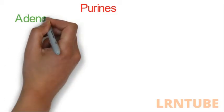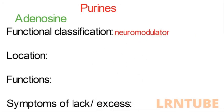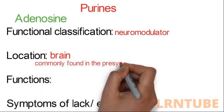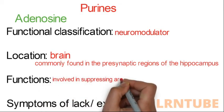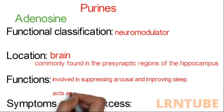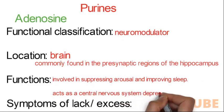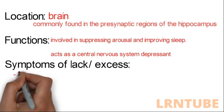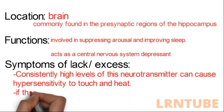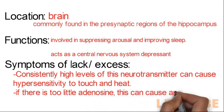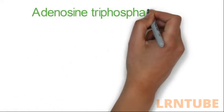Under purines, we have adenosine and adenosine triphosphate. Adenosine is classified as a neuromodulator located in the brain and is commonly found in the presynaptic regions of the hippocampus. Its functions include suppressing arousal and improving sleep, and it acts as a central nervous system depressant. Consistently high levels can cause hypersensitivity to touch and heat, while too little adenosine can cause anxiety and trouble sleeping.